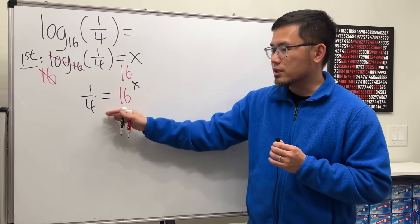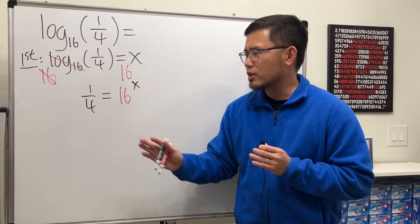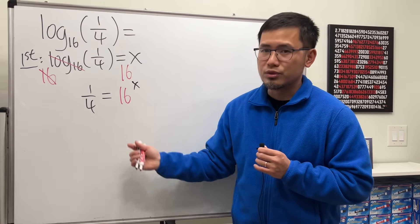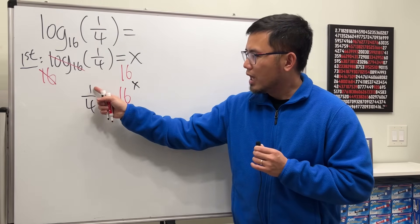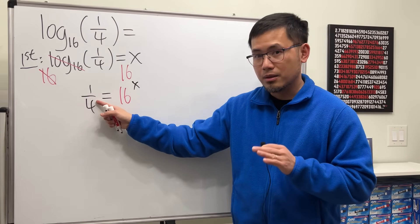Now we are working with an exponential equation. To solve x right here, we are going to try to make sure that the bases are the same on both sides. Here we have 1 over 4. This 4 is like 4 to the first power on the bottom, right?